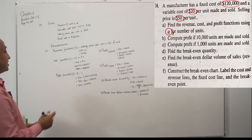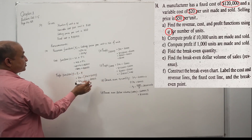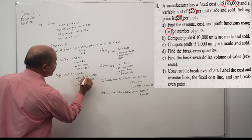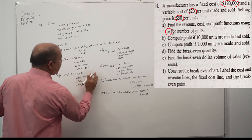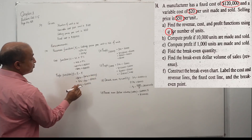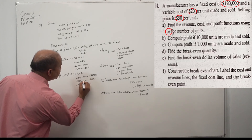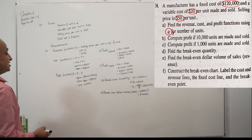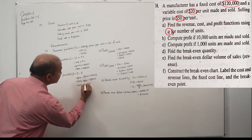For this problem: revenue function R = 50Q. Cost function C = 20Q + 1,20,000. Profit function equals revenue minus cost: 50Q minus (20Q plus 1,20,000), which gives 30Q minus 1,20,000.